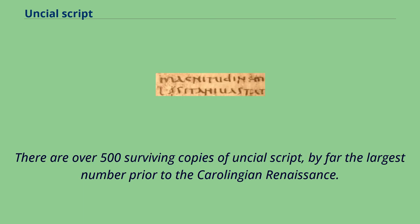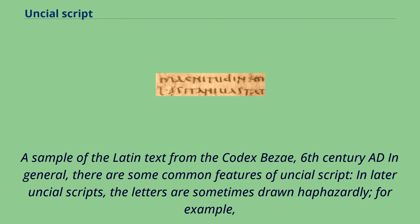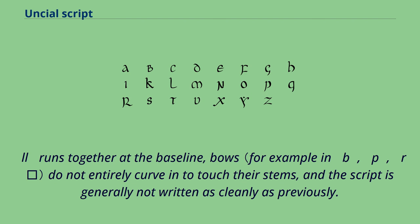There are over 500 surviving copies of Uncial script, by far the largest number prior to the Carolingian Renaissance. A sample of the Latin text from the Codex Besi, 6th century AD. In general, there are some common features of Uncial script. In later Uncial scripts, the letters are sometimes drawn haphazardly. For example, LL runs together at the baseline, bows do not entirely curve in to touch their stems, and the script is generally not written as cleanly as previously.